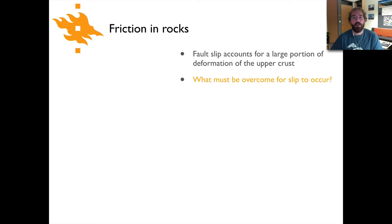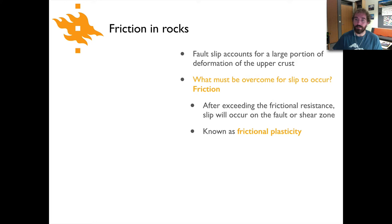Now friction in rocks is fairly important for deformation in the upper parts of the crust because fault slip accounts for a large portion of the deformation in the upper crust. In order for a fault to slip, what must be overcome? You've probably already guessed that it's friction, the frictional relationship between the two sides of the fault. The friction has to be overcome in order for the fault to slip. And only after exceeding that frictional resistance will slip occur on the fault or within the shear zone. And so this is known as frictional plasticity.